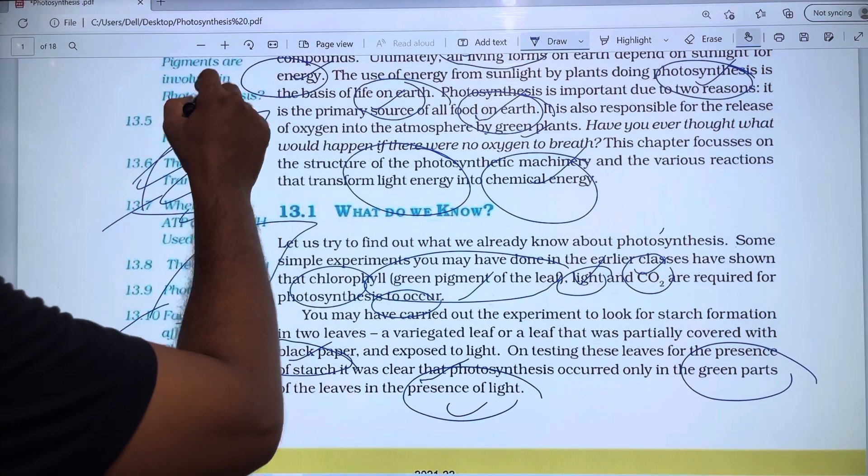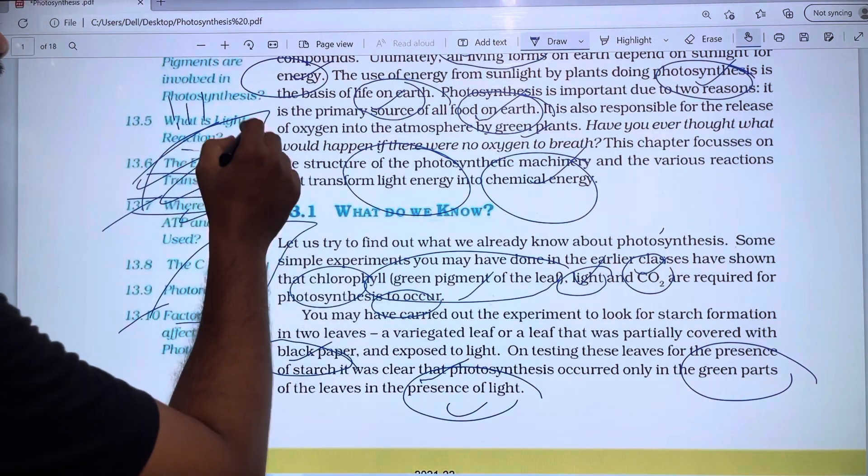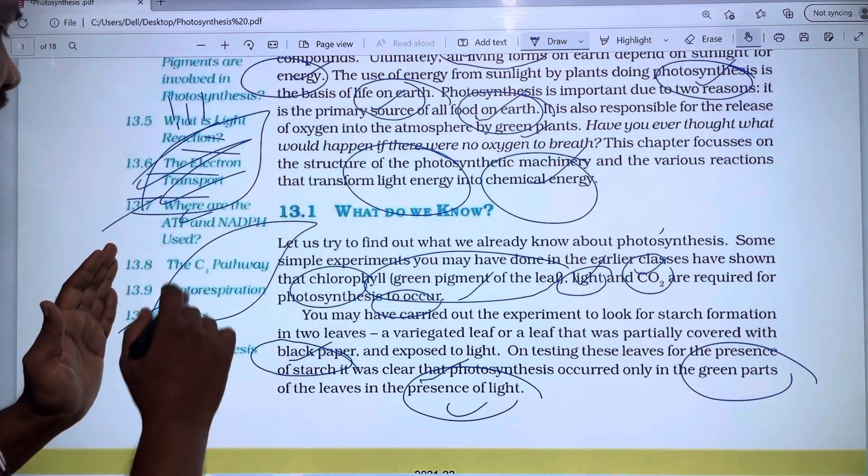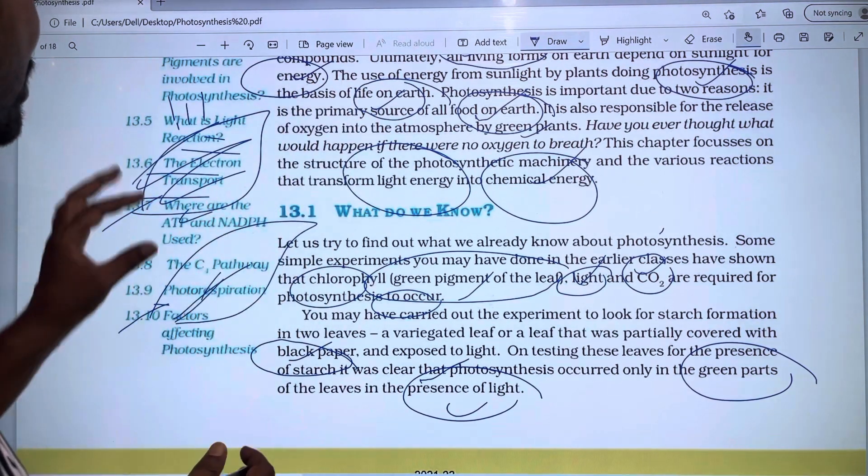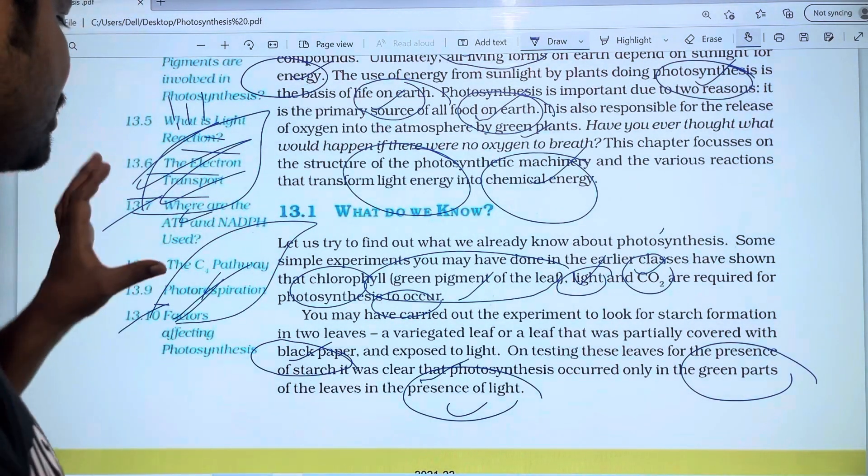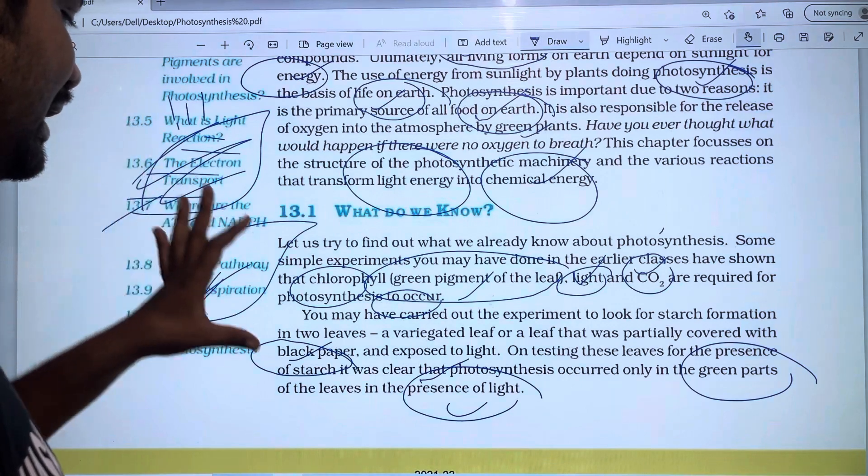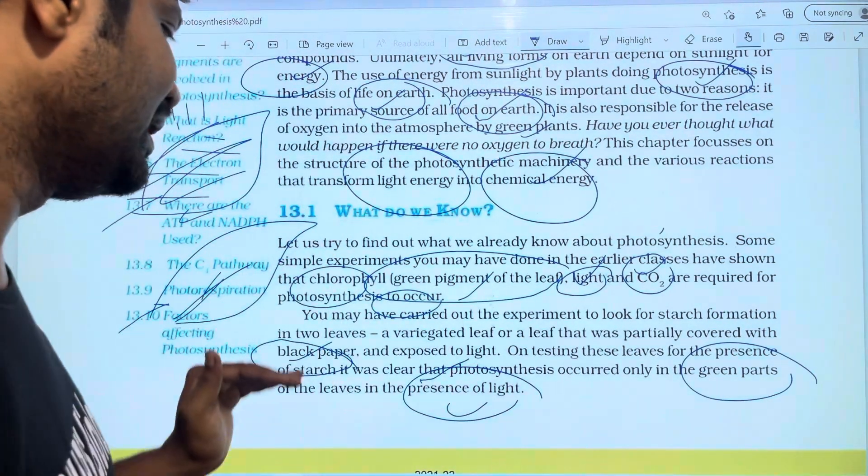The leaf is exposed to sunlight. We test these leaves for the presence of starch. It was clear that photosynthesis occurs only in the green parts of the leaves in the presence of light.